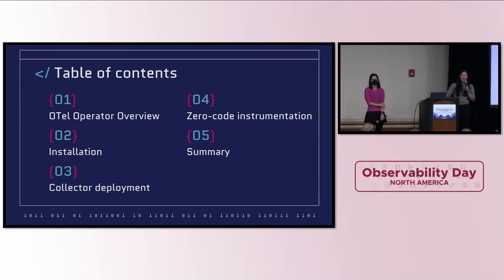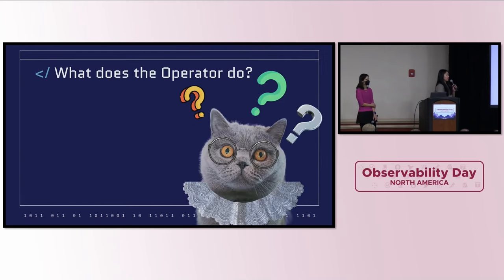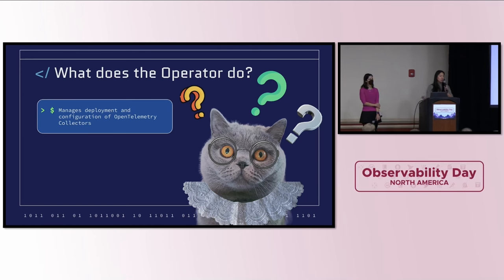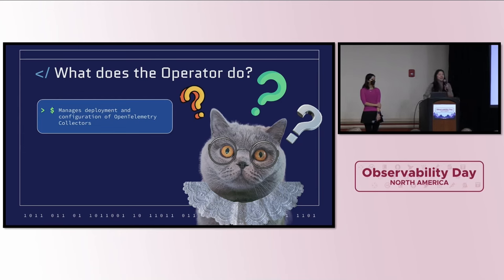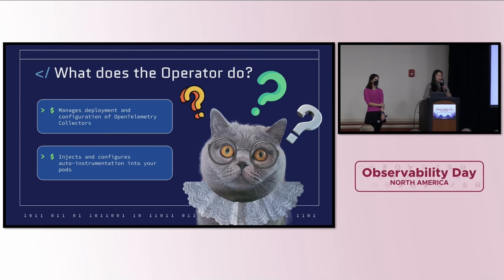We'll wrap up with a summary of key takeaways and references for further learning. So what exactly is the operator and what does it do? The operator is primarily responsible for two things. The first is managing the deployment of your collector, making sure the configuration is correct. It also manages a fleet of OpenTelemetry collectors via OpAMP, which is a remote network protocol for managing large fleets of data collection agents. It's also responsible for injecting and managing the configuration of auto instrumentation into your pods.